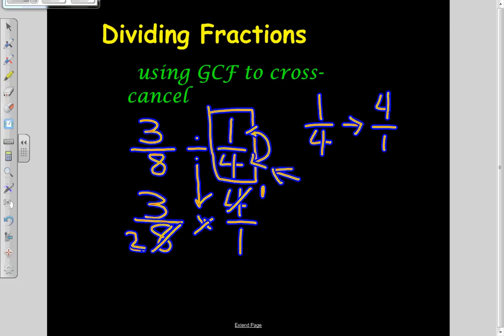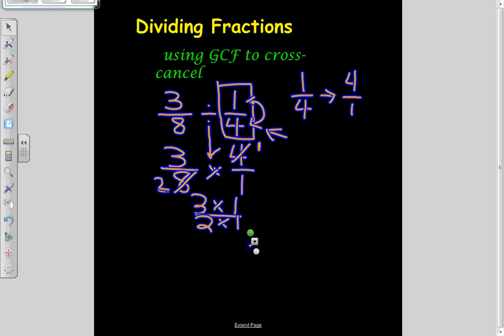Now, my last step is to multiply the numerators and multiply the denominators. So I will rewrite this as 3 times 1 over 2 times 1. And if we look a little bit closer at this, 3 times 1 is, of course, going to be equal to 3. And 2 times 1 is equal to 2.